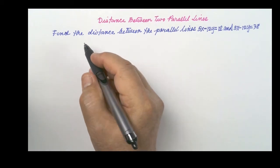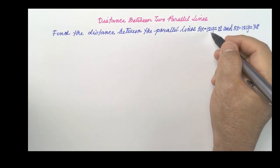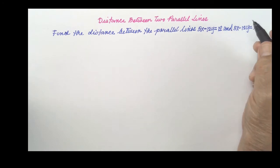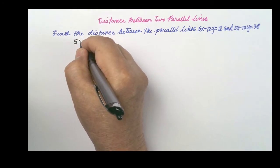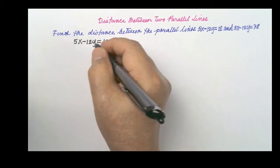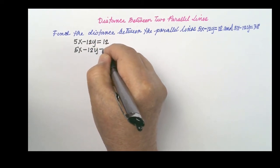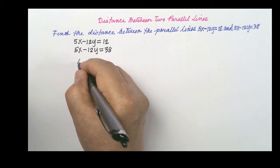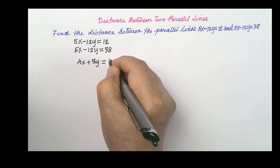Let us solve this problem. Find the distance between the parallel lines 5x minus 12y is equal to 12 and 5x minus 12y is equal to 38. Let us write them again here: 5x minus 12y is equal to 12, and 5x minus 12y is equal to 38. Each of them is in the form of ax plus by is equal to c.